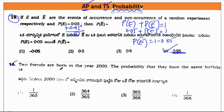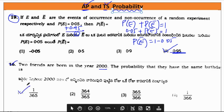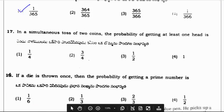So P of naught E will be 1 minus 0.05 which is 0.95. Moving on to the next question, two friends are born in the year 2000. The probability that they have the same birthday is, it will be 1 by 365 as we have 365 days in a year.